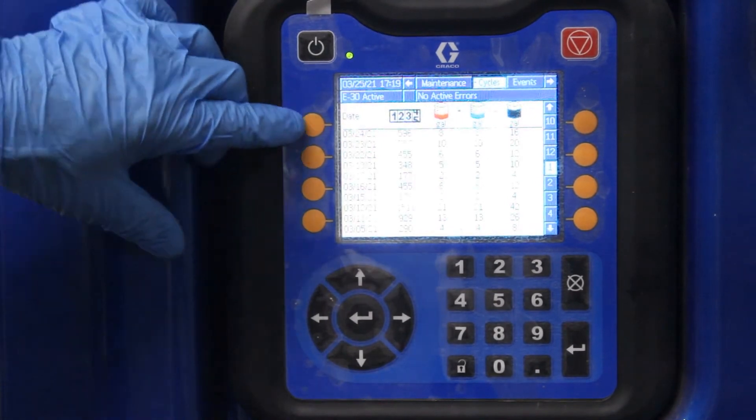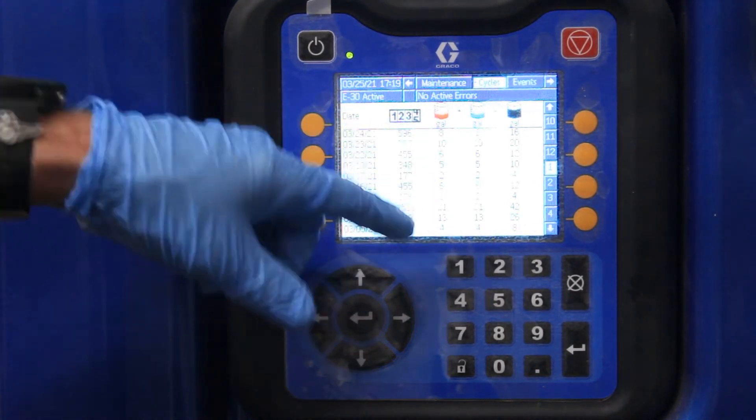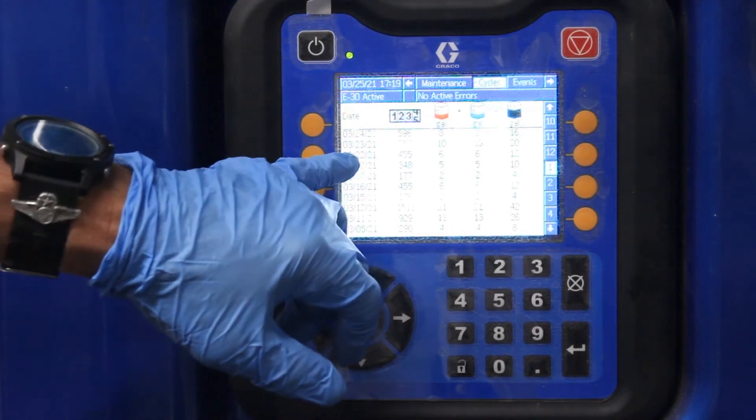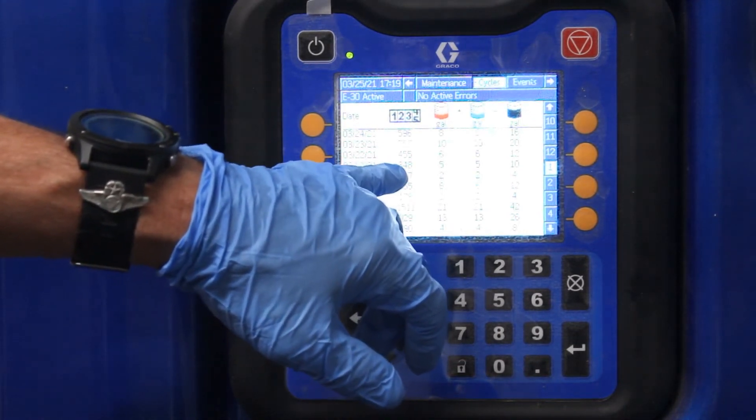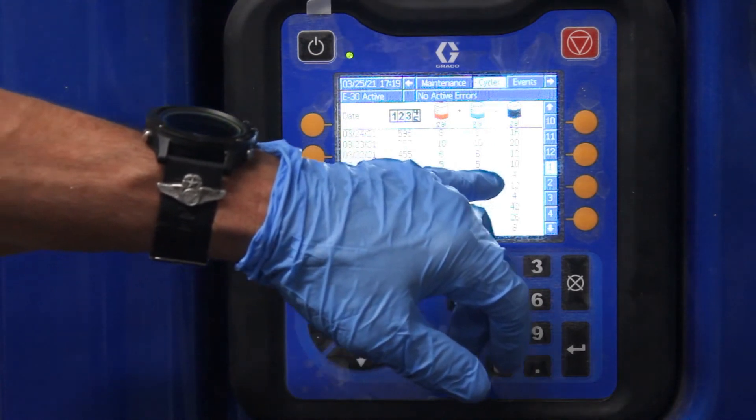Here, you got a history. This history tells you how much you sprayed per day. It tells you the date, how many strokes or cycles, how many gallons you used in total.